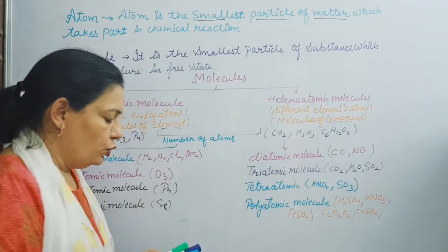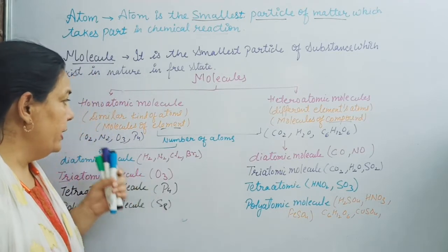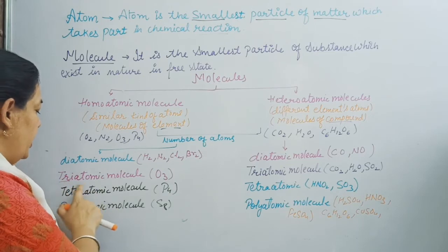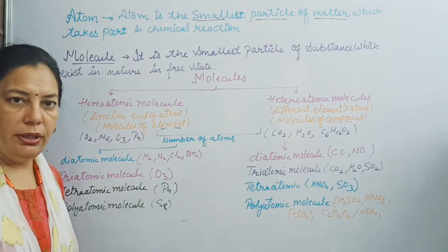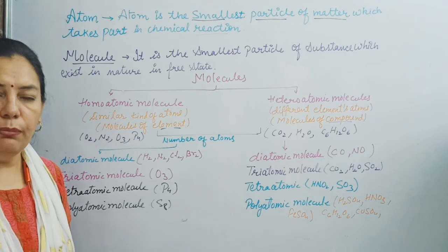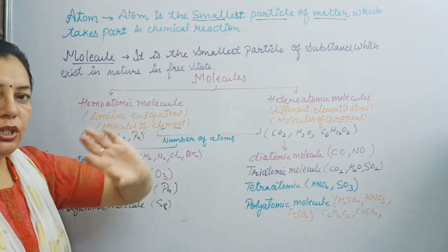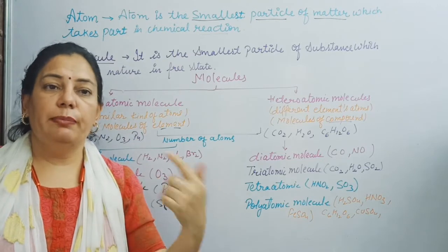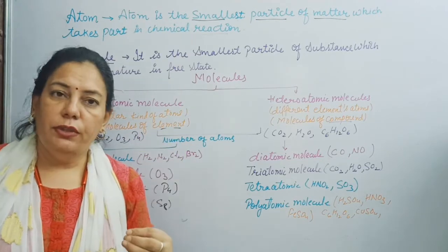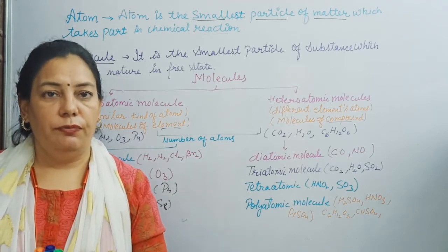So, on the basis of number of atoms, molecules are again divided: homoatomic molecules may be diatomic, triatomic, tetraatomic, and polyatomic. This is the classification of atoms and molecules. An atom is the smallest particle of matter which takes part in a chemical reaction.